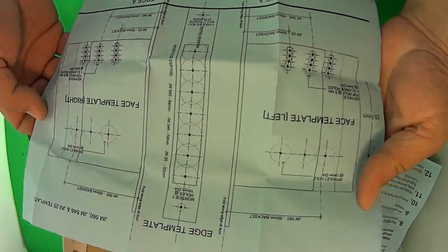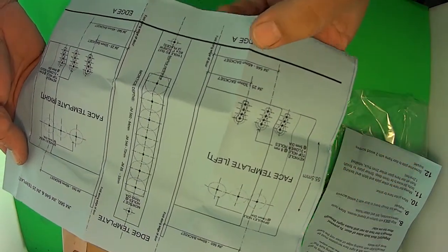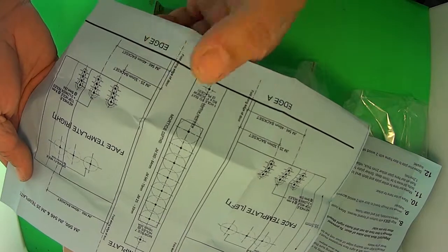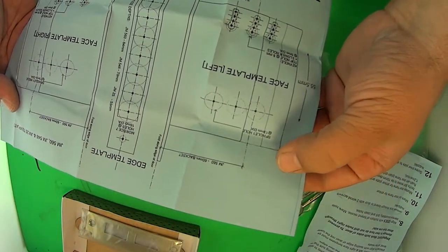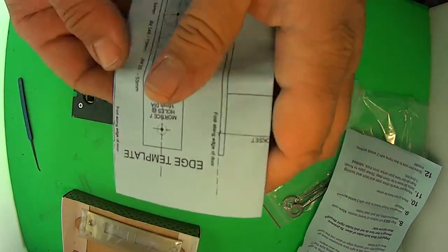Shows you the backset and all the rest. This template can be used for different models here. You can see the JM25, the JM546, and of course the JM560, which we have, which is the 60mm backset.